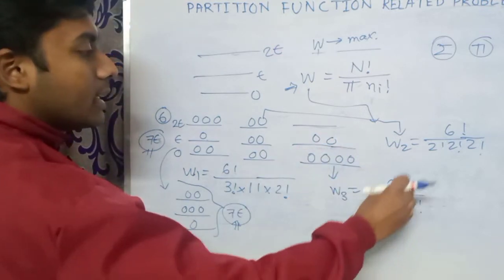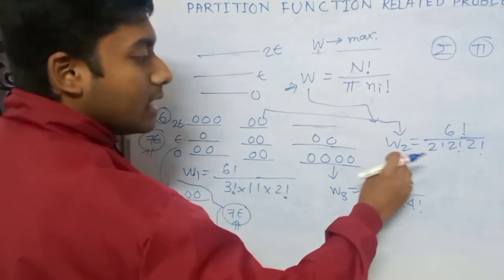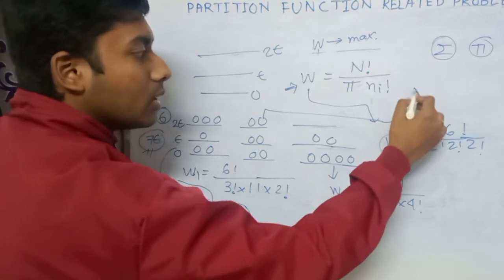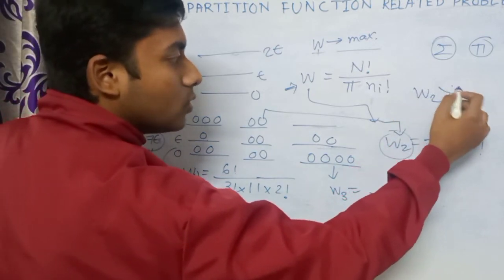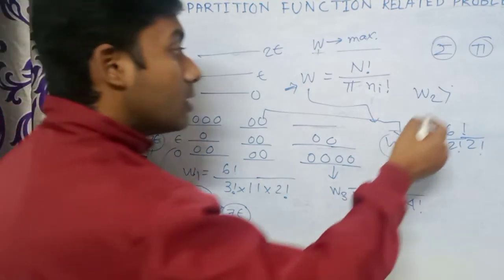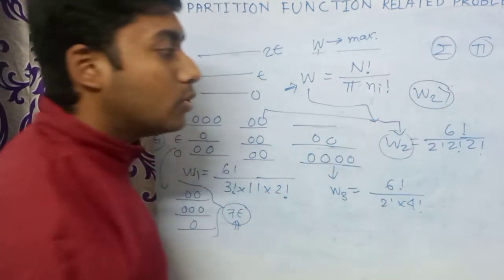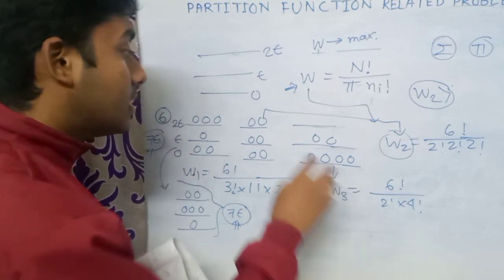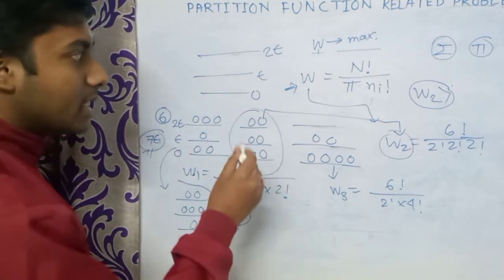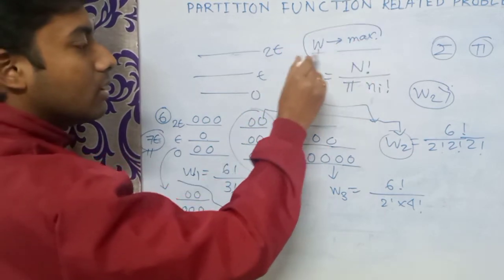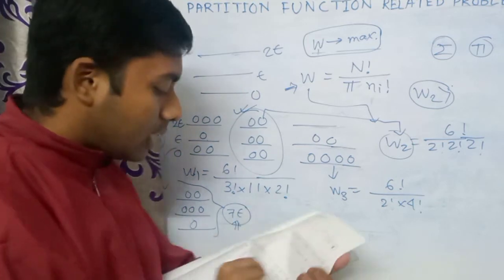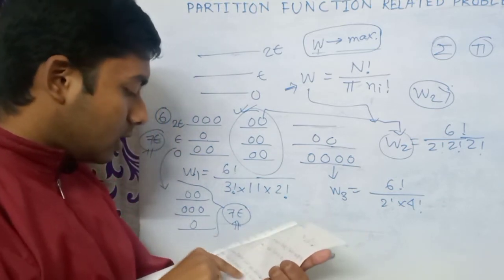Since the denominator of W₂ is smallest, W₂ is greater than both W₃ and W₁. So W₂ is the greatest, meaning the number of microstates for that configuration is maximum. Therefore, the most probable configuration for this question is the one corresponding to W₂, with two particles in each energy level.